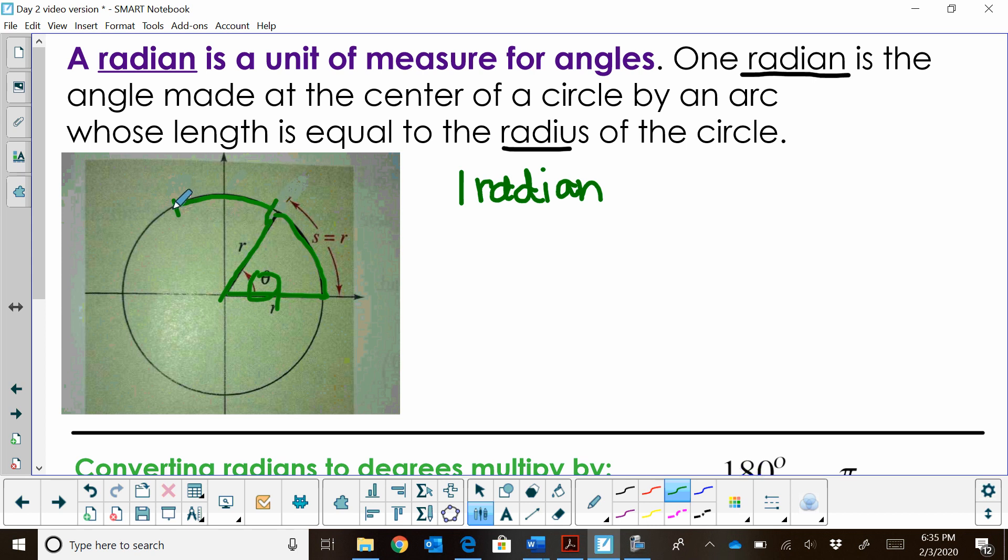And then a fourth one, and then a fifth one, and then a sixth one. And then there's a little gap here. So, it takes a little bit more than six radians to go all the way around.